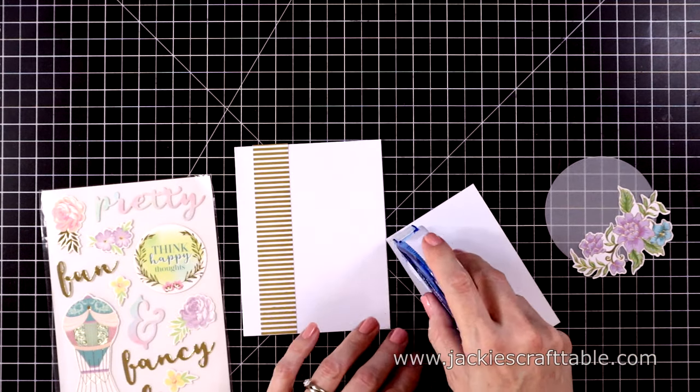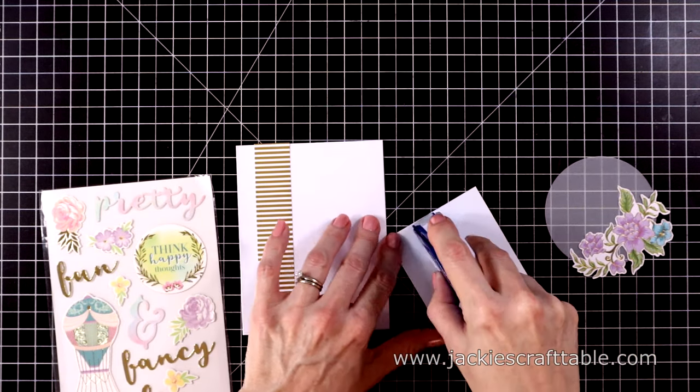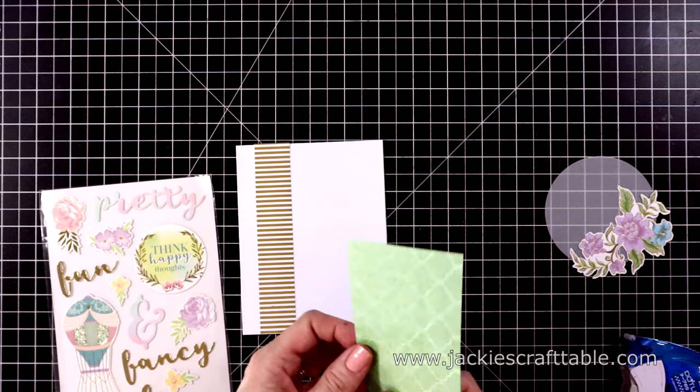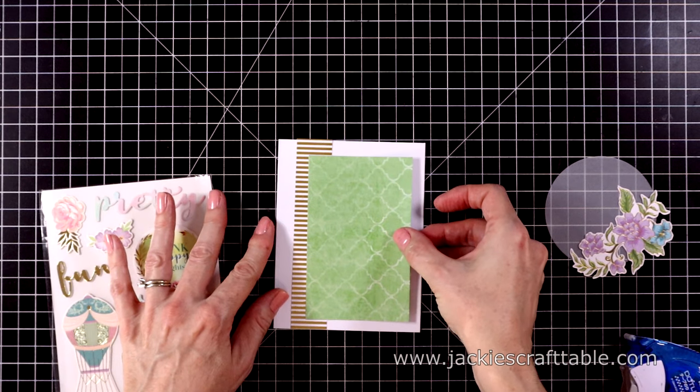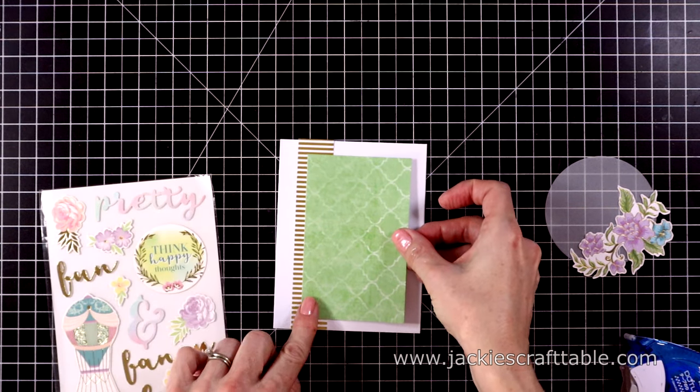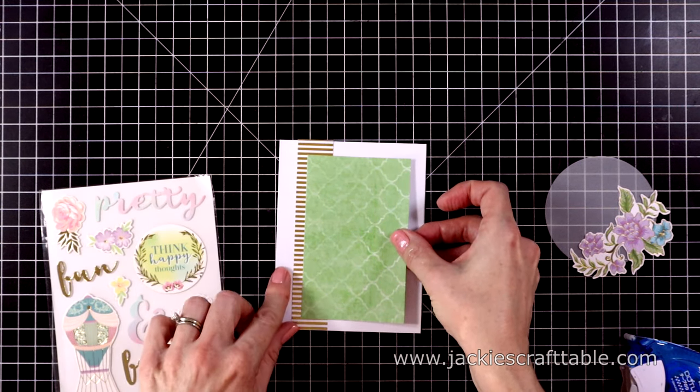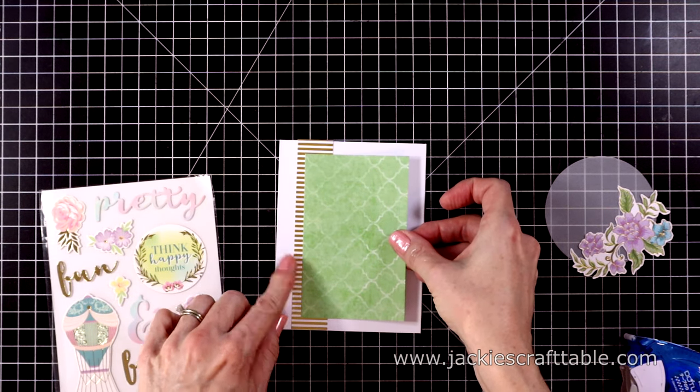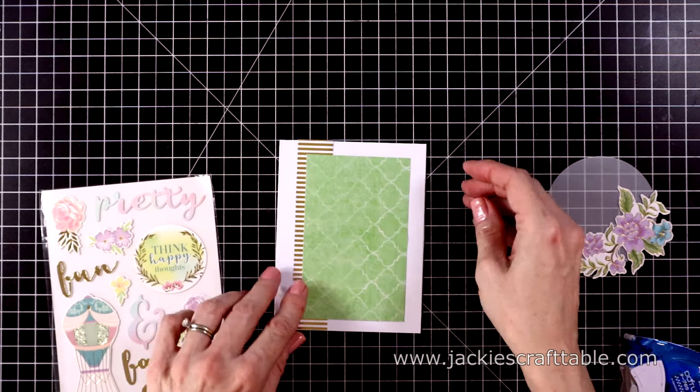I also cut down a piece of green cardstock. No, this is patterned paper, sorry. And I'll overlap the gold foiled paper with this green one. I also cut out a circle with some vellum. And that's going to go behind my sentiment.